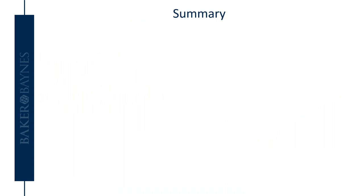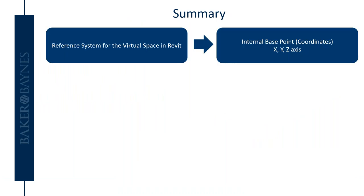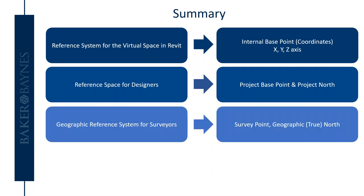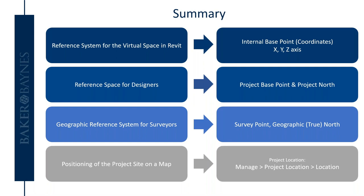In summary, the positioning in Revit and its different concepts: the reference system for the virtual space in Revit - where you are in Revit - is your internal base point (X, Y, and Z axis). The reference space for designers is your project base point and project north. The geographic reference system for surveyors refers to your survey point and true north. And lastly, the positioning of your project site on a map is your actual project location, which you can set up in your Manage tab under Project Location.